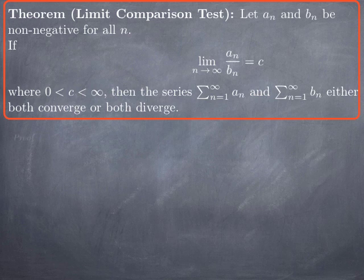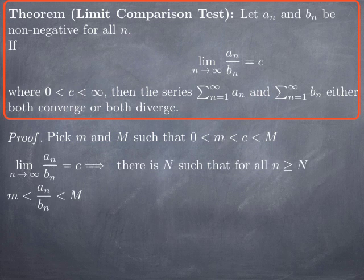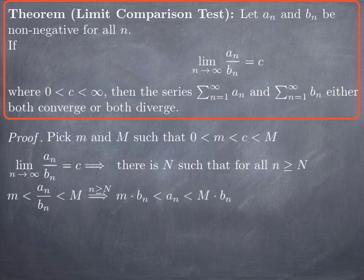Let's prove this fact. It is in fact a simple variant of the direct comparison argument. Because if c is a non-zero positive constant, then we can find m and M that are a lower bound and upper bound for c, so c is in the open interval from m to M. And if the limit of the quotient a_n over b_n is c, then for indices large enough, we can make the quotient a_n over b_n lie in that interval from m to M. Multiplying both sides by b_n, that means that for indices large enough, a_n is between a constant multiple of b_n and another constant multiple of b_n.